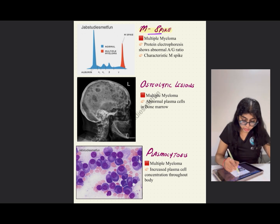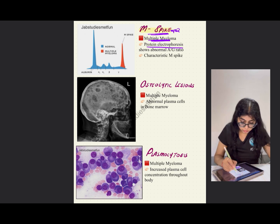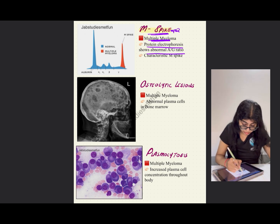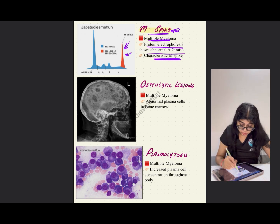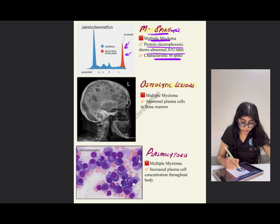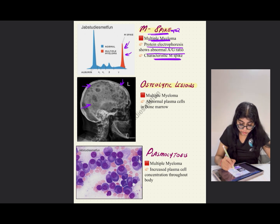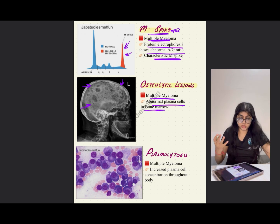M-spike is another important exam question, seen in multiple myeloma. Protein electrophoresis shows an abnormal A to G ratio, and the characteristic M-spike is present. Osteolytic lesions — an X-ray of the skull will be given in the exam showing many places where bone has been eroded. These osteolytic lesions are seen in multiple myeloma, caused by abnormal plasma cells in the bone marrow.